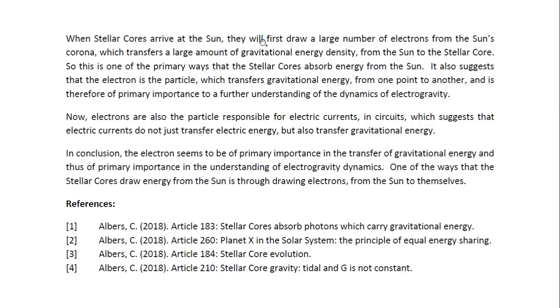Now, when stellar cores arrive at the sun, they will first draw a large number of electrons from the sun's corona, which transfers a large amount of gravitational energy density from the sun to the stellar core. So, this is one of the primary ways that the stellar cores absorb energy from the sun. It also suggests that the electron is the particle which transfers gravitational energy from one point to another, and is therefore of primary importance to a further understanding of the dynamics of electrogravity. Now, electrons are also the particle responsible for electric currents in circuits, which suggests that electric currents do not just transfer electric energy, but also transfer gravitational energy.